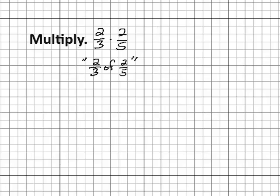One thing to know is that this represents us taking two-thirds of two-fifths. So we'll use this green block to describe one.